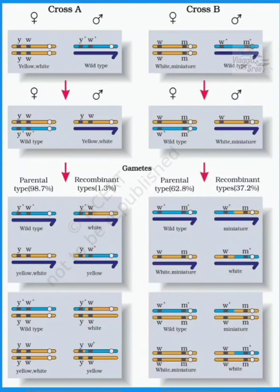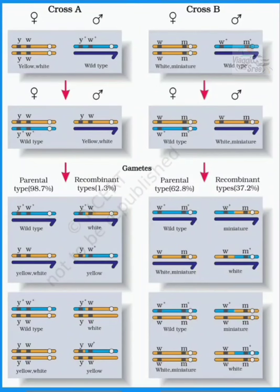We are learning about T.H. Morgan's Drosophila melanogaster and X-linked characters. This is the dihybrid cross. Let's talk about the F2 phenotypic ratio: 9 is to 3 is to 3 is to 1.